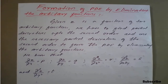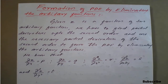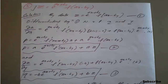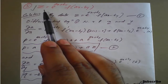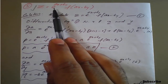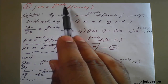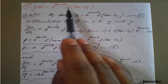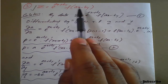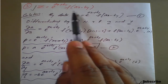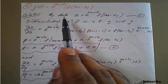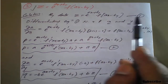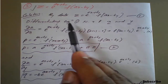The question is: find the PDE from the equation z is equal to e raised to (ax + by) into f of (ax minus by). Here f of (ax minus by) is the arbitrary function which we are going to eliminate from the given equation. Call this equation number one. Now differentiate equation one with respect to x and y partially.